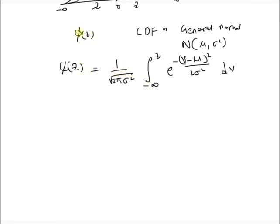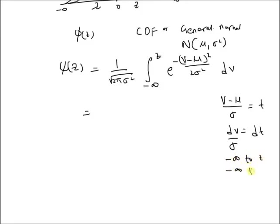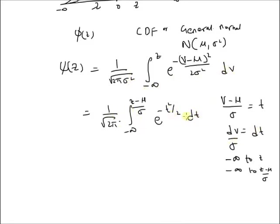Now we can use the definition of Phi(z) to express Psi(z) by using a change of variables: let (v minus μ) divided by σ equal t, which means dv divided by σ equals dt. By using this change of variable, the limits become minus infinity to (z minus μ) over σ. So we have 1 over square root of 2π times the integral from minus infinity to (z minus μ)/σ of e to the power of minus t squared by 2 dt, which is by definition equal to Phi evaluated at (z minus μ) over σ.